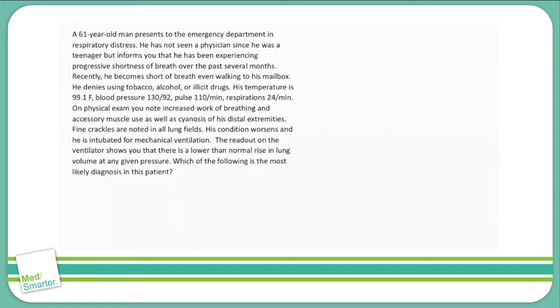A 61-year-old man presents to the emergency department in respiratory distress. He has not seen a physician since he was a teenager, but he informs you that he's been experiencing progressive shortness of breath over the past several months. The differential for respiratory distress is pretty broad, but the fact that he hasn't seen a physician since he's a teenager might be hinting that this is some kind of condition due to a missed screening appointment or something very chronic that was going on for a long time and wasn't caught because he wasn't seeing a physician.